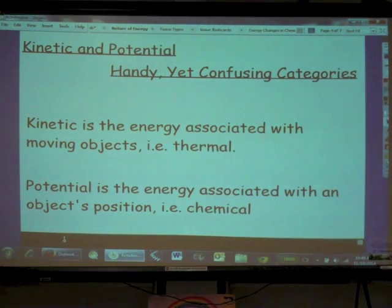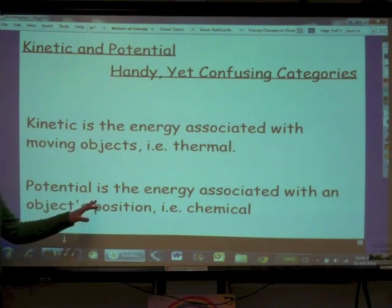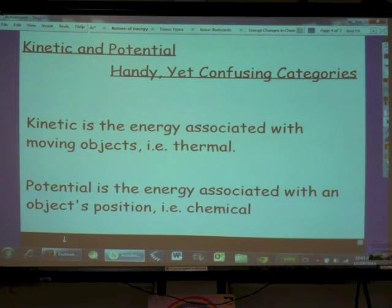Potential energy is the energy associated with an object's position. Chemical energy is a form of potential energy. In that, it is the energy that is associated with atoms' positions to one another in a compound or a molecule.